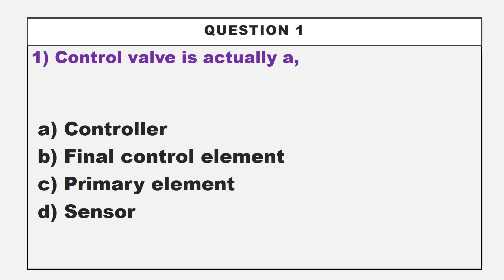Control valve is actually a dash. Option A: controller. Option B: final control element. Option C: primary element. And option D: sensor. You have 5 seconds to think.